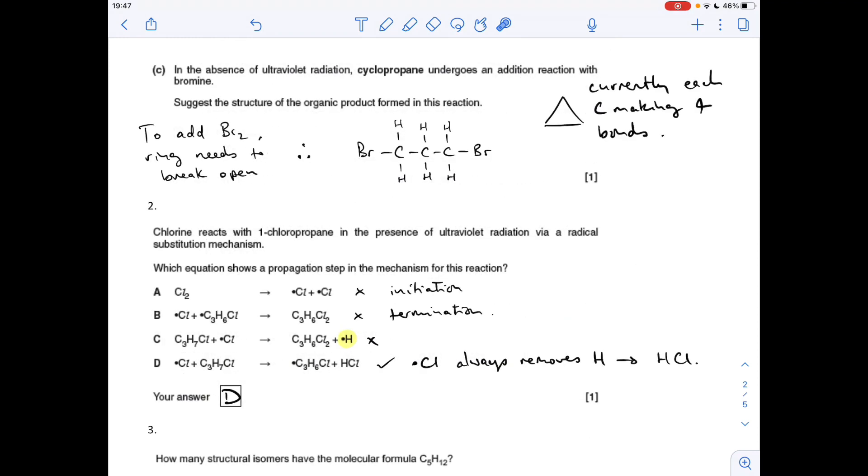Moving on to part C now—slightly tricky this one. We're not familiar with alkanes undergoing addition reactions. We're told that without UV, cyclopropane undergoes addition reactions with bromine. Suggest the structure of the product. If you think about cyclopropane, all of the carbon atoms are currently making their four bonds, so we can't add bromine onto that.